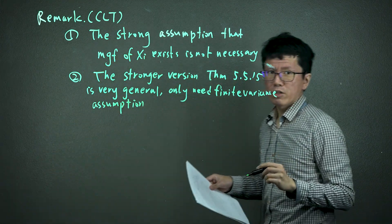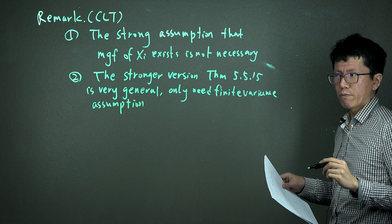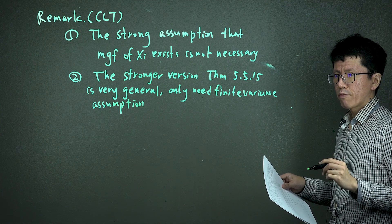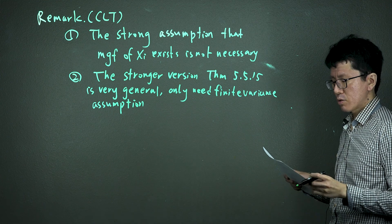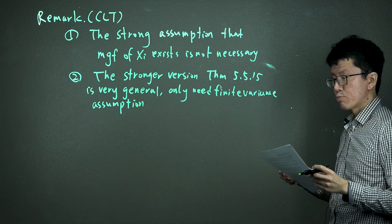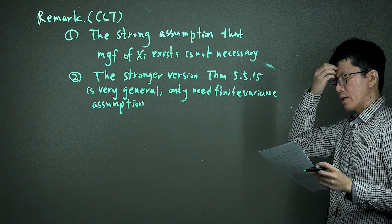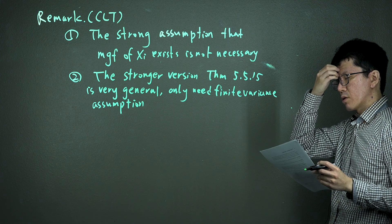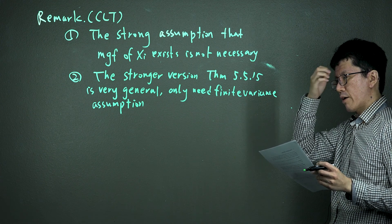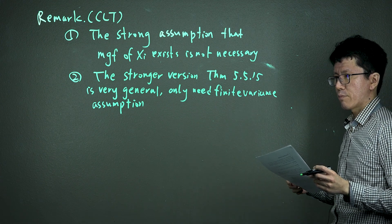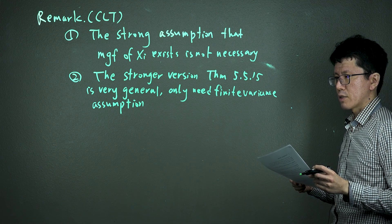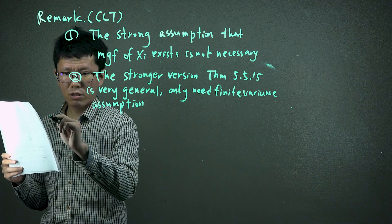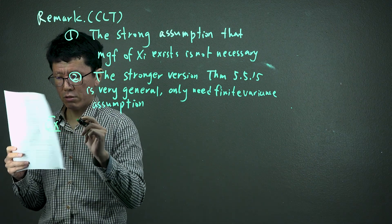The stronger version, Theorem 5.5.15, is very general and only needs the finite variance assumption to prove the CLT. When you have a random sample and finite variance, you can prove the CLT. Let's look at an example for the CLT.